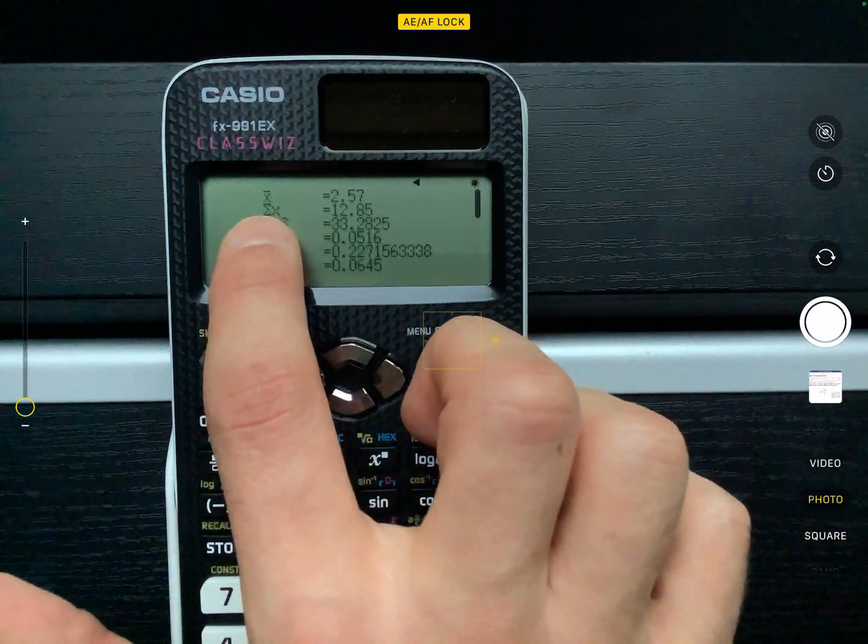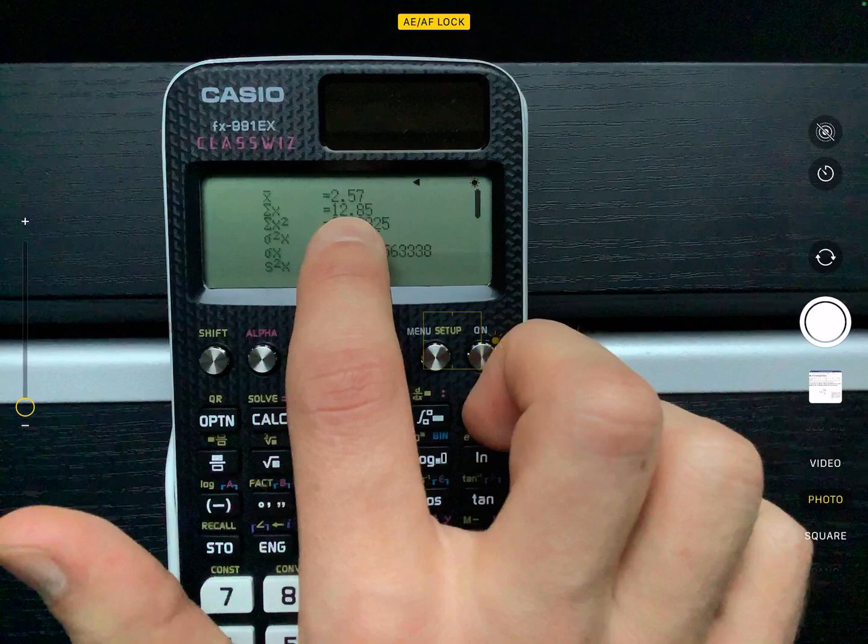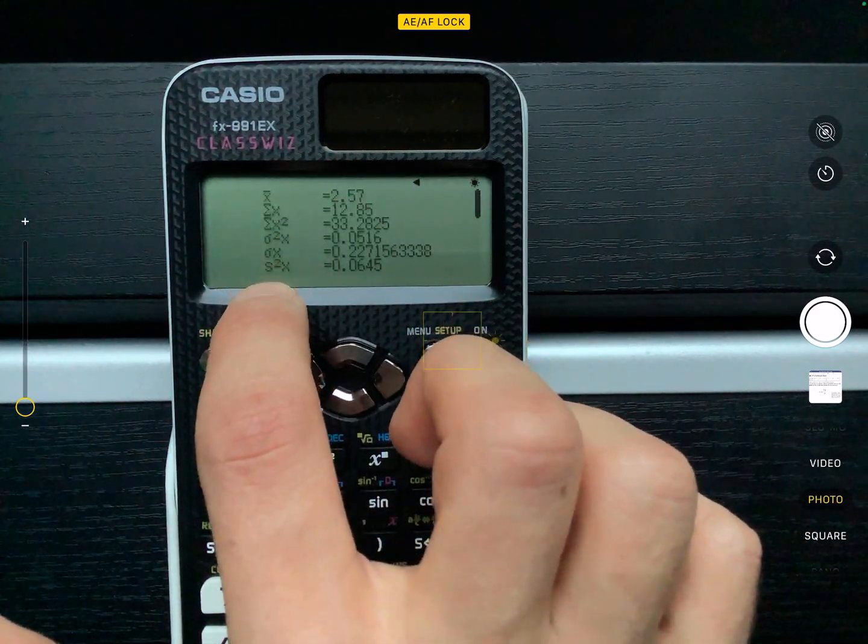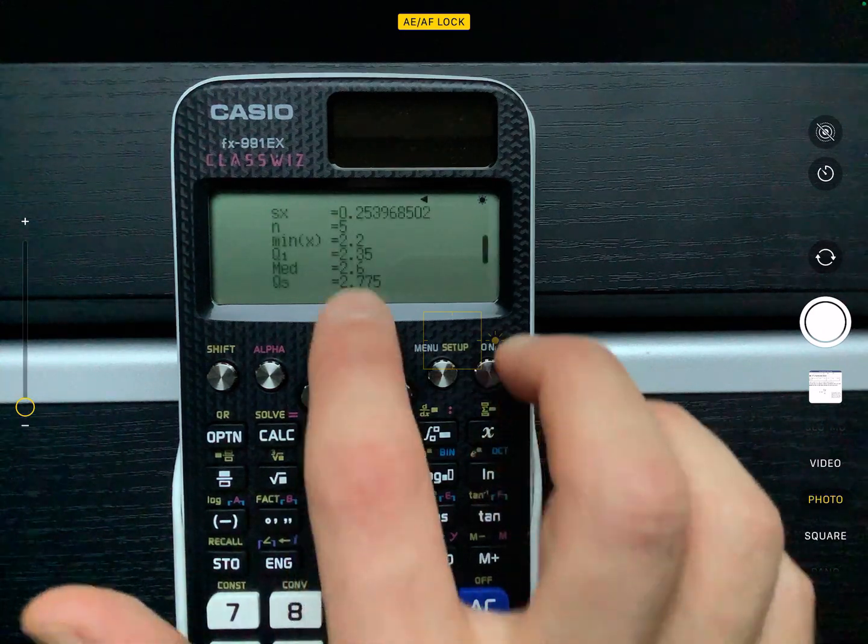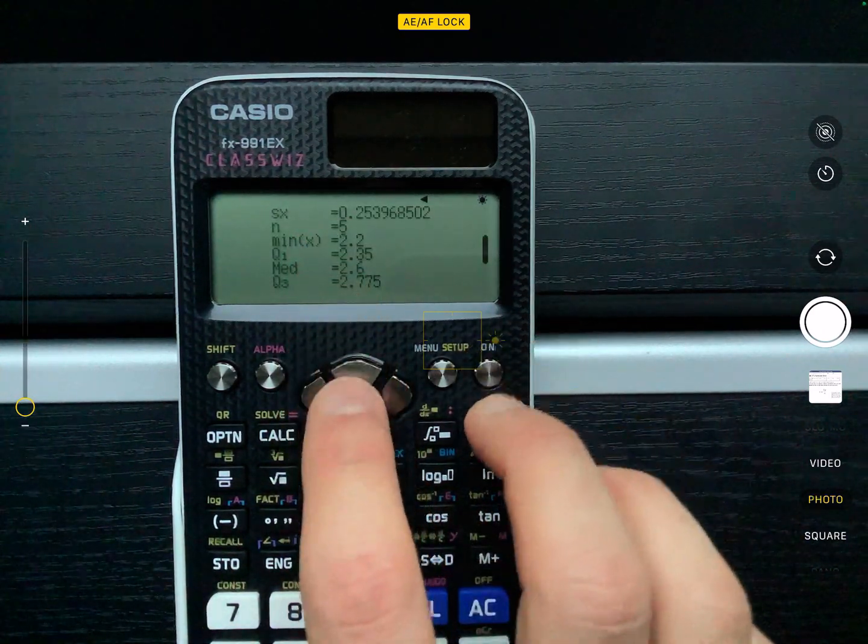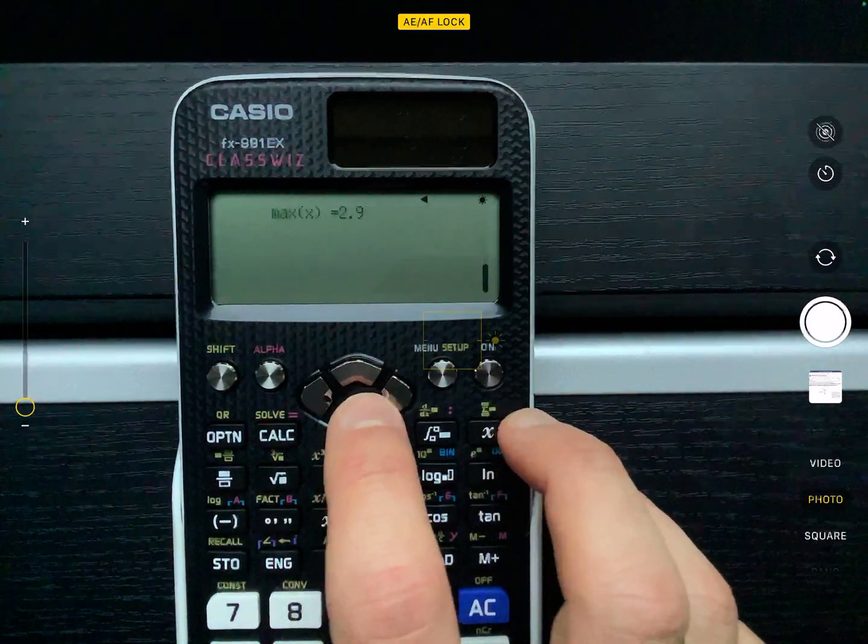So you can see what it says. You've got the sum of X is 12.85 and X bar is 2.57. And there's some other values that are in here too. As you scroll down the list, it's got the value of N. It's got some other bits like the minimum, the median, the maximum. Don't worry about those for now.